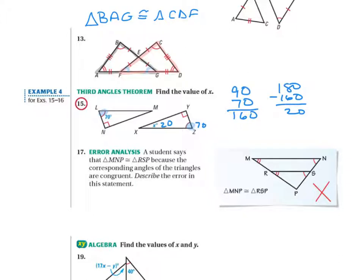For number 17, it says a student says that triangle M-N-P — which is the whole large triangle — is congruent to the smaller triangle R-S-P. The reason they're saying it's congruent is that they've shown all the angles to match. However, in order to show that two triangles are congruent, we also have to show the corresponding sides are congruent. So this is where the student made a mistake — they've only shown the corresponding angles, not the corresponding sides.